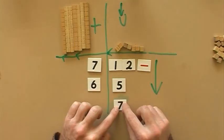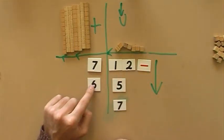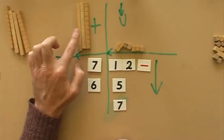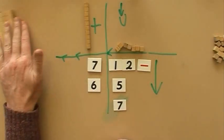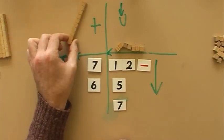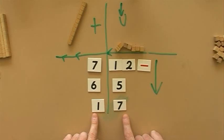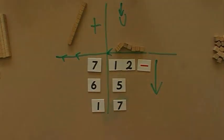Now I've got 7 take away 6. So I'm going to take away 6: 1, 2, 3, 4, 5, 6. What am I left with? I'm left with 1. So my answer is 17. Isn't that easy?